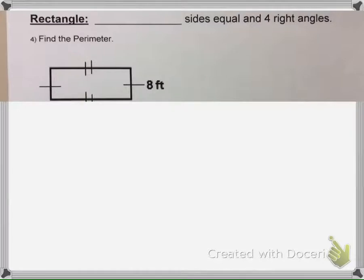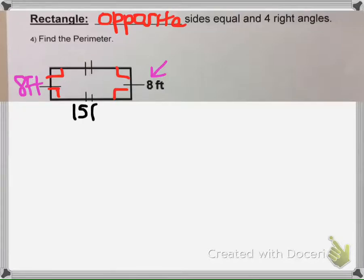Okay, next example, we have a rectangle. A rectangle is just a four-sided polygon that has four right angles. And we know that the opposite sides of a rectangle are equal. So if they tell us that this side here is 8, we know then that this side is 8 feet here. And since they told us that this side here is 15 feet, then we know that this side is 15 feet.